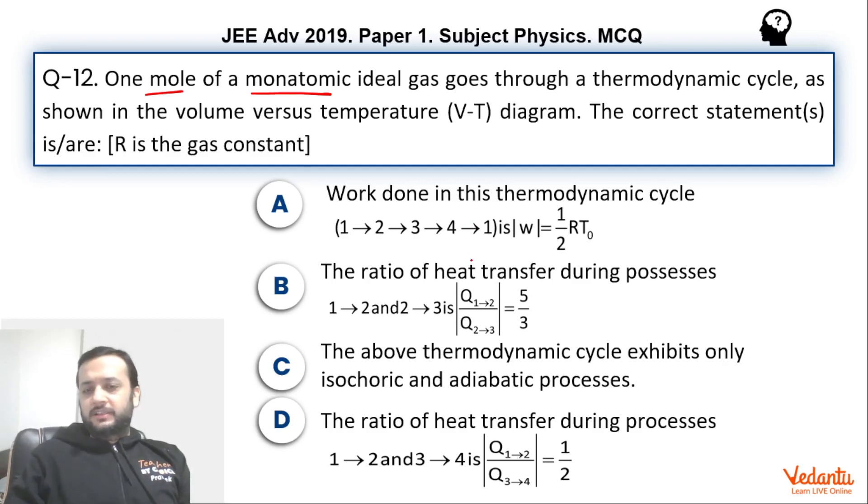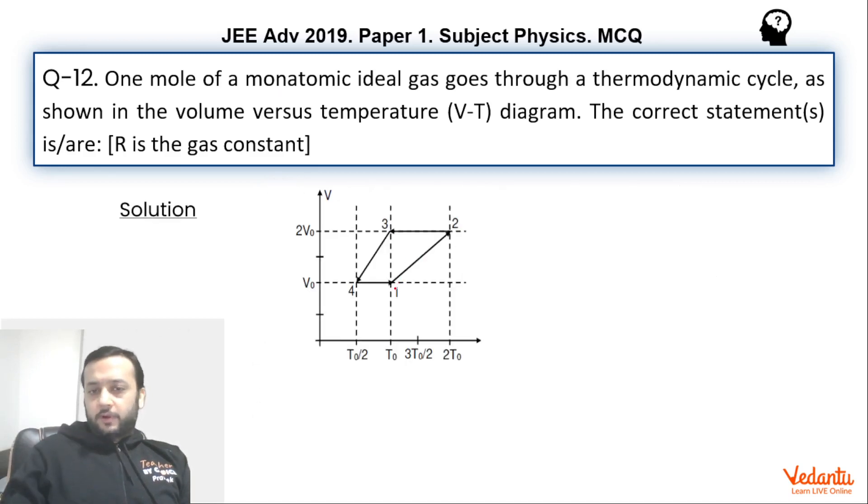Work done in the cycle, ratio of heat transfers in the process 1-2, 2-3, and the type of processes—similar types of questions were asked. Now, if you see this cycle carefully from 1 to 2, you'll see the ratio of V by T is constant. At point 1, V by T is V0 by T0, and at point 2 also the ratio is 2V0 by 2T0, which is again V0 by T0. So if V by T is constant in any process, that means it's an isobaric process, because we know PV equals nRT. So if V by T becomes constant, then this simply means pressure is constant. So we can say that 1 to 2 was an isobaric process.